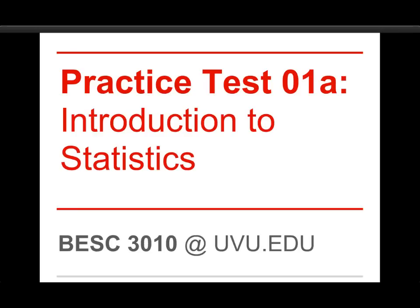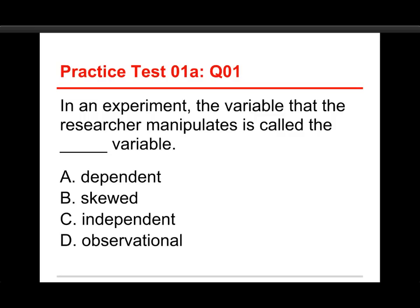The first question is: in an experiment, the variable that the researcher manipulates is called the blank variable. The choices are dependent, skewed, independent, or observational. The answer to this one is C, independent.